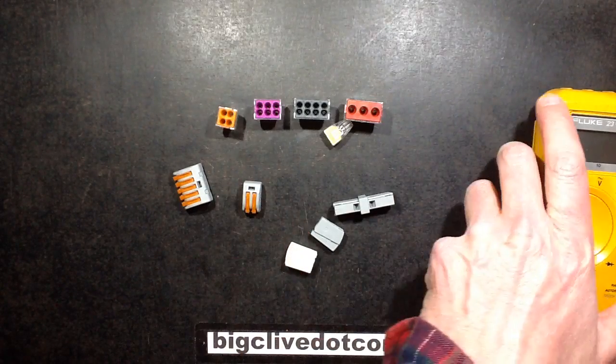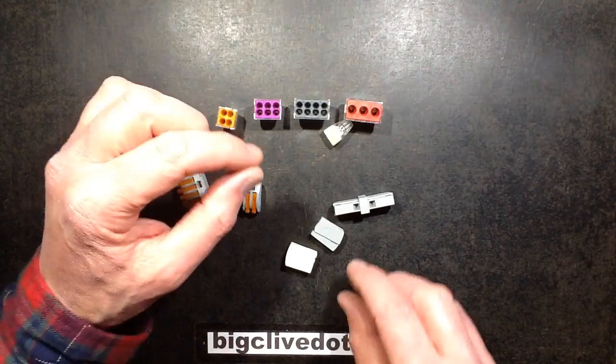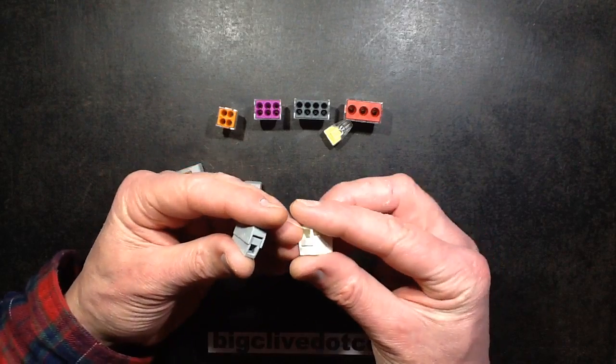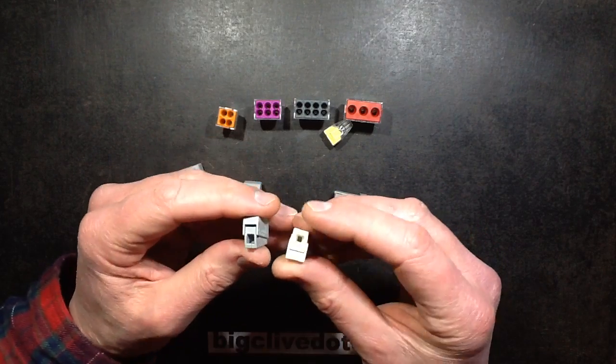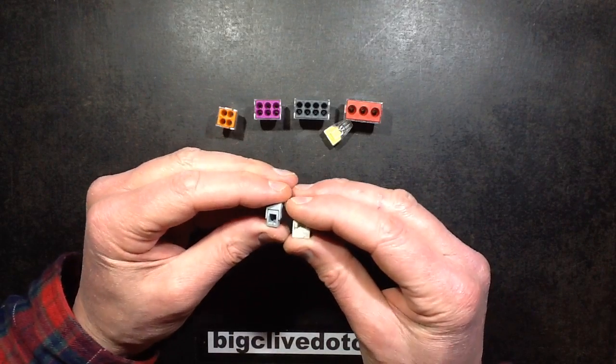Now these ones here are quite interesting. They're different. These are for interfacing either one or two solid cores to a flexible cable and they're used in lighting applications where you've got the solid core mains cable come in then it goes to the flex to go out to the light.